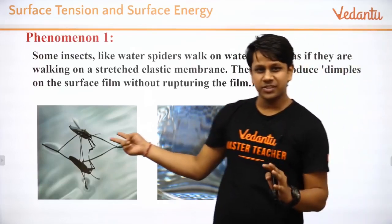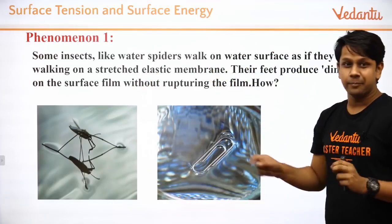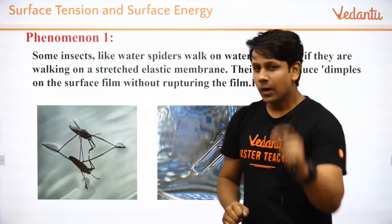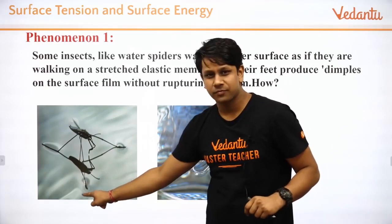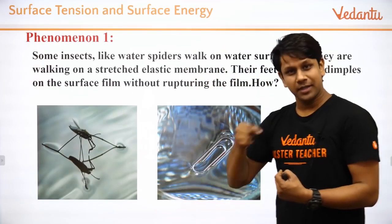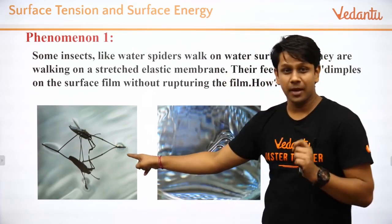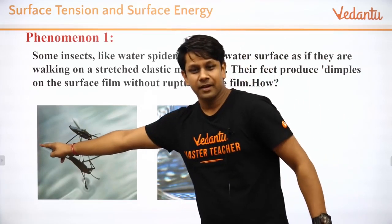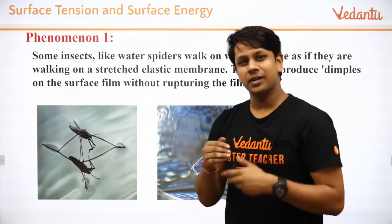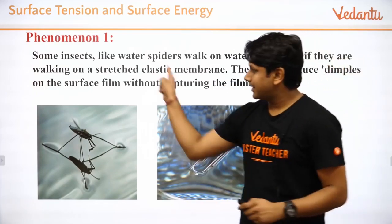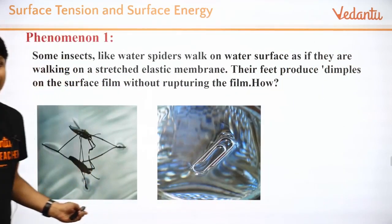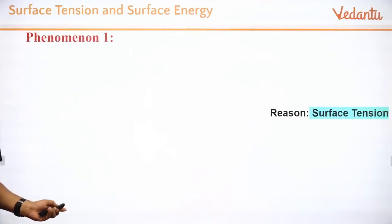What we learn from this is: insects that are very light, or a very light pin, can rest on the surface of water because the surface acts like a stretched membrane. If you look very carefully, dimples form on the surface — small dimples where the needle rests. These are water dimples. The reason behind all this is surface tension.